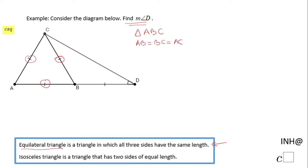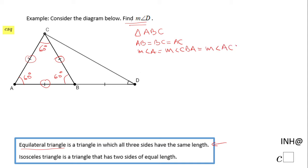This is what we call an equilateral triangle. That also means that these three angles are congruent, and the measure of each angle will be 60 degrees. So the measure of angle A equals the measure of angle CBA equals the measure of angle ACB — they are all 60 degrees.